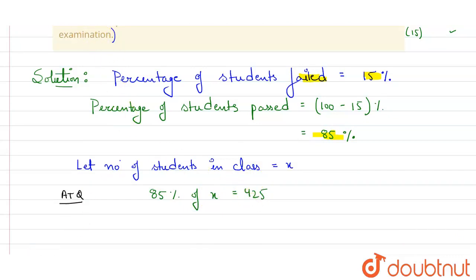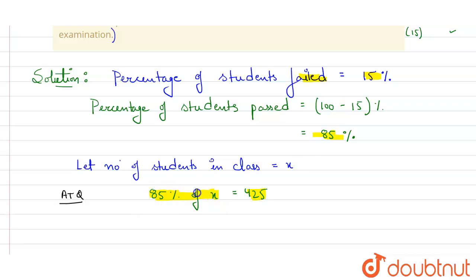Let me explain again. It is given that 425 students passed the exam and we calculated that 85 percent of students passed. So 85 percent of x, where x is the total number of students in the class, equals 425.